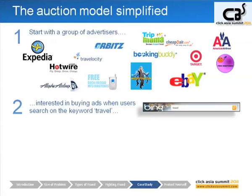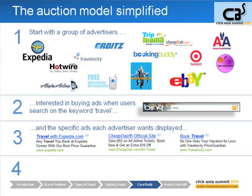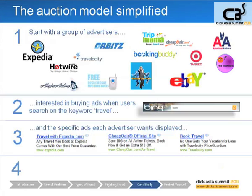Then they have to submit ads that have to be approved for that keyword — things like 'book travel,' 'travel Expedia,' 'cheap air online official site.' And then, they make bids for clicks as an auction.